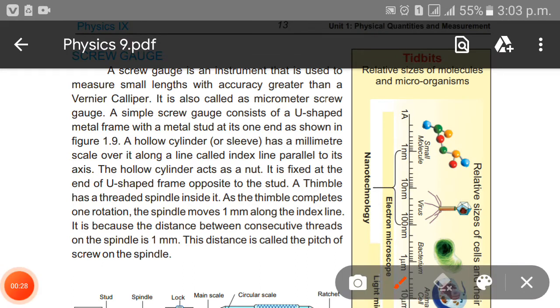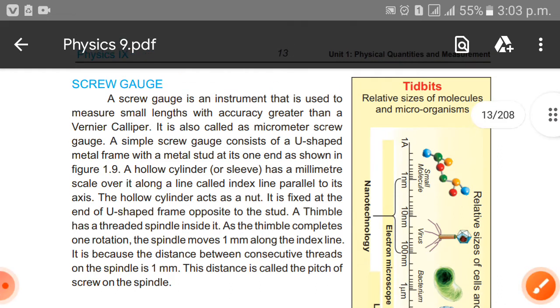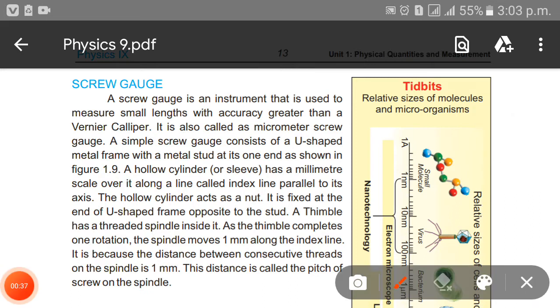A screw gauge is an instrument that is used to measure small lengths with accuracy greater than Vernier Caliper. The screw gauge is more accurate than Vernier Caliper. It is also called a micrometer screw gauge. Why is it called micrometer? Because it gives you the reading in micrometers.